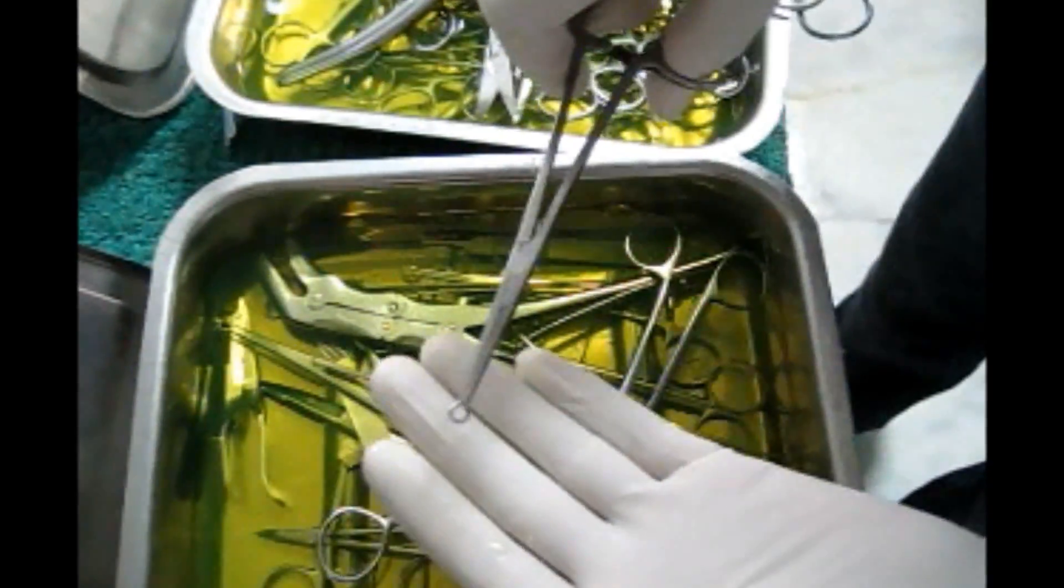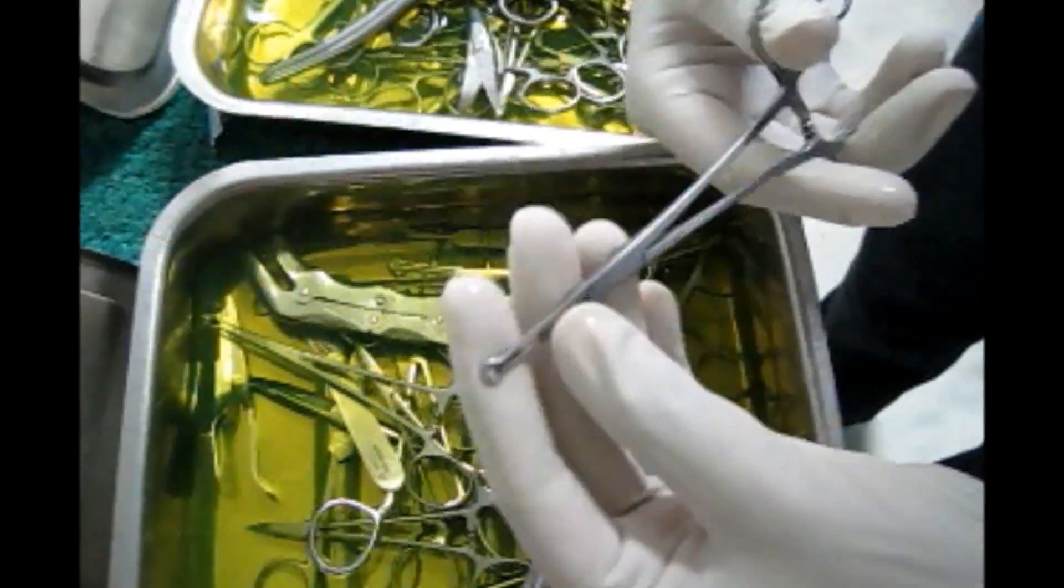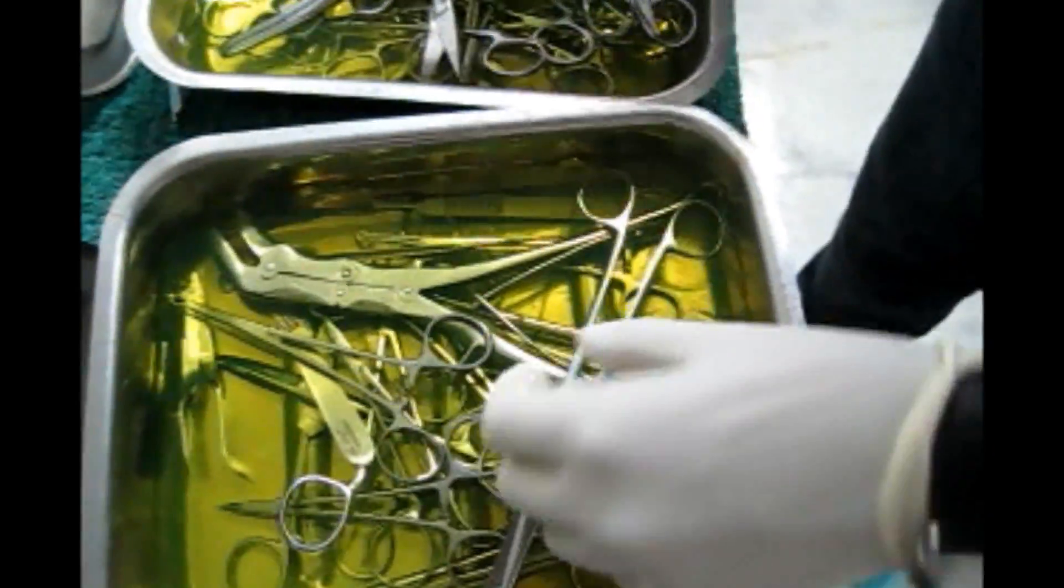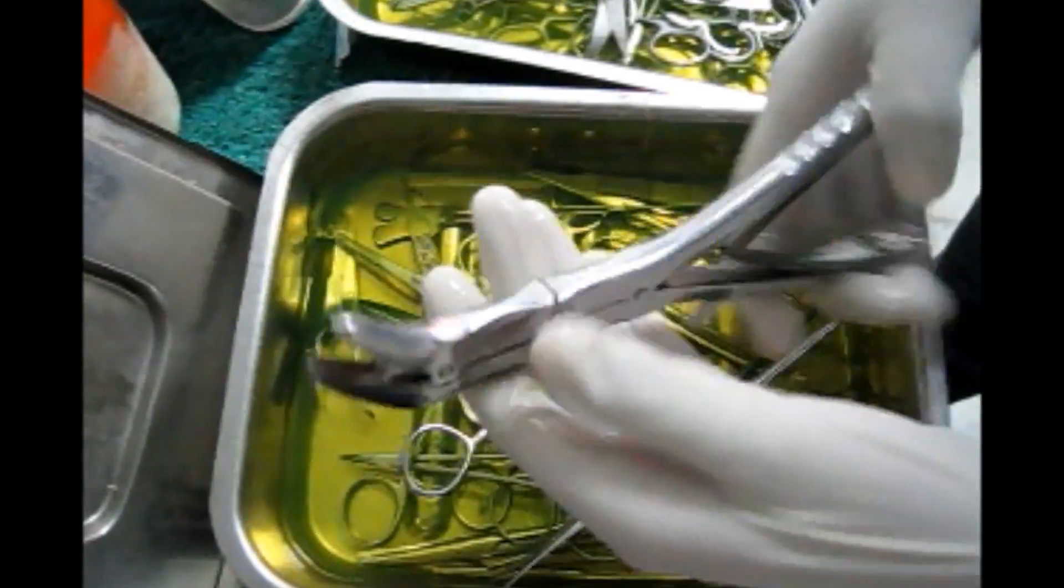Now, this is the ring forcep which is used to hold the vas deferens in the vasectomy. You can watch our vasectomy procedure.